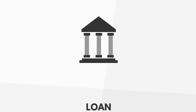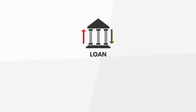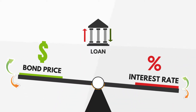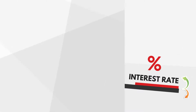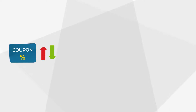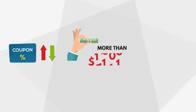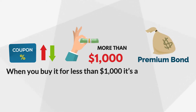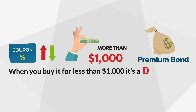However, just like any loan you see at a bank, the rates go up and down. If the rate goes up, new bonds pay more, so your bond is worth less, and vice versa. If the coupon doesn't move but rates do, you can pay more than $1,000 — this is called buying a bond at a premium. When you buy it for less than $1,000, it's a discount.